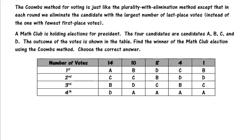We are going to start by adding up all of the voters so that we know the total number of voters that we're working with. We have 14 plus 10 which is 24 plus 8, 32 plus 4, 36 plus 1, 37. So we have a total of 37 voters.